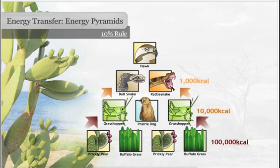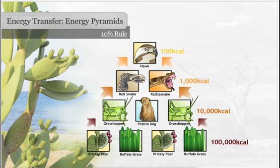Divide the energy available at level 2 by 10 to determine the energy available at level 3. Then to calculate the energy available at T4, divide 1,000 by 10 — 100 kilocalories are available at level 4.